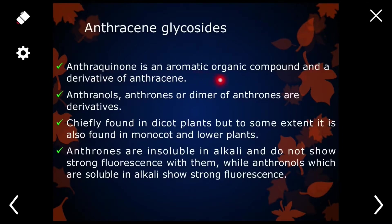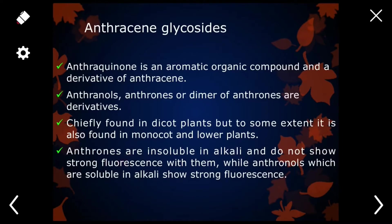Anthracene is an aromatic organic compound, and anthraquinone is a derivative of anthracene. Anthranols, anthrones, and dimers of anthrones are also derivatives of anthracene, and they are chiefly found in dicot plants, but to some extent they are also present in monocot and lower plants. Anthrones are insoluble in alkali and do not show strong fluorescence, while anthranols, which are soluble in alkali, show strong fluorescence.